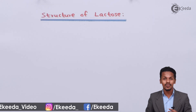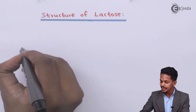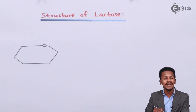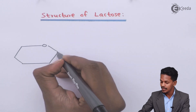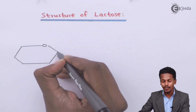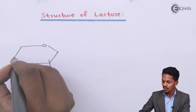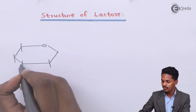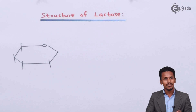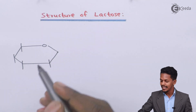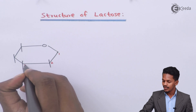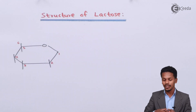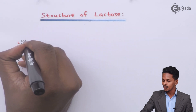Let us first understand the structure of beta-galactopyranose. This is the anomeric carbon atom. Talking about the rest of the carbon atoms, this is carbon atom number one, two, three, four, five, and this will be carbon number six, which includes CH2OH.